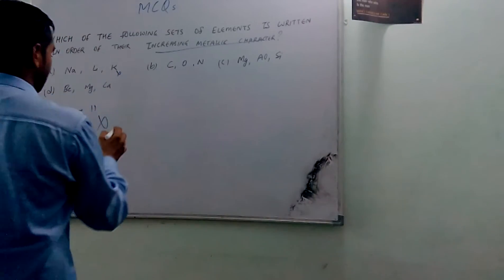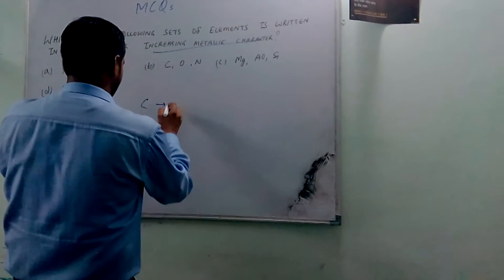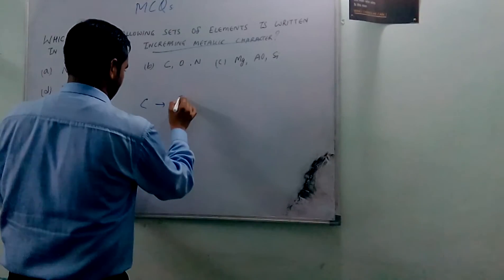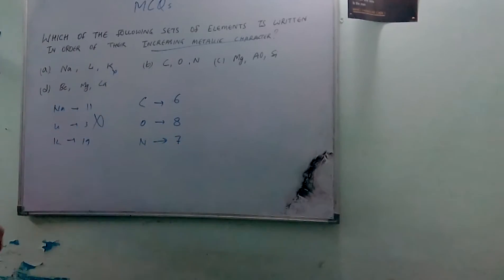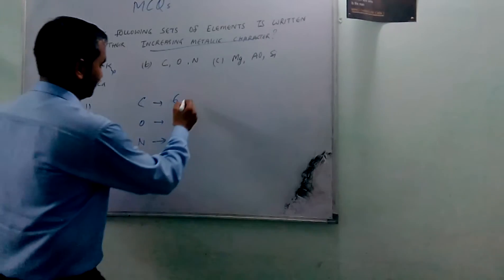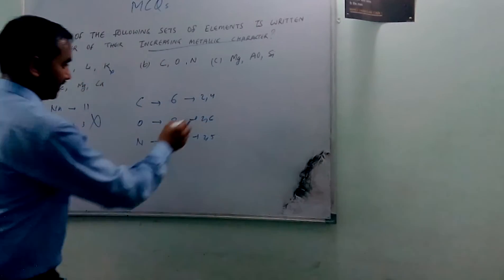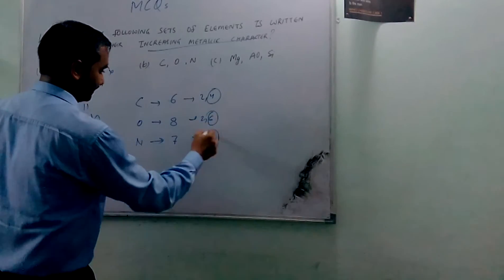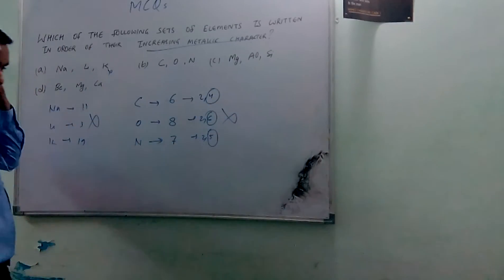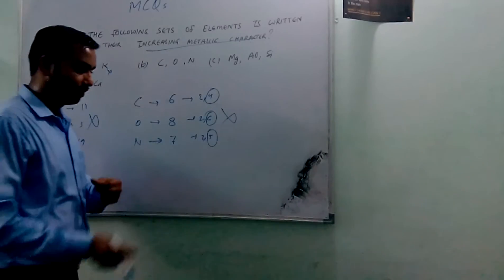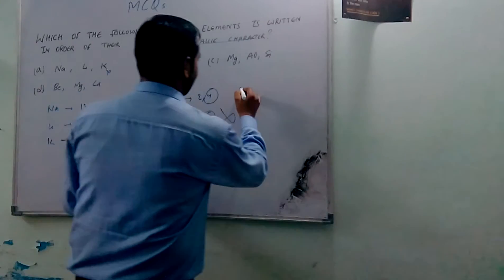Coming to option B: carbon, oxygen, nitrogen with atomic numbers 6, 8, and 7 respectively. Their electronic configurations are 2,4 then 2,6 and 2,5. The number of shells is the same for all three, but the electrons in the outermost shell are in a zigzag order rather than a consistent decreasing order, so this is not the correct option either.